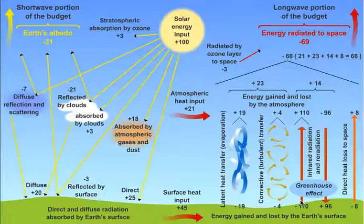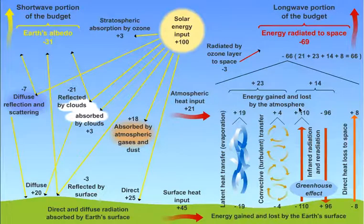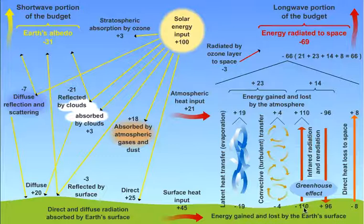110 parts leave the surface as infrared radiation — as long-wave radiation emitted from the surface — but it doesn't make it out to space because it's actually absorbed by greenhouse gases in the atmosphere. Of that 110, 96 are then emitted by those greenhouse gases back towards the surface, and 14 are emitted out to space. So that's a net gain: a loss of 110, a gain of 96, so a net loss of only 14 parts.